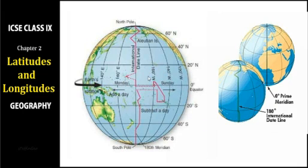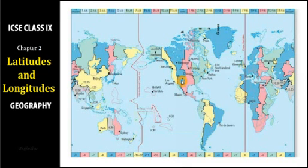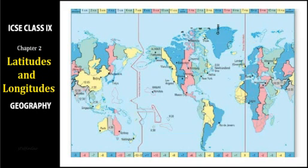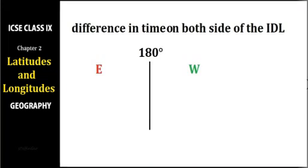On a map, the Prime Meridian passes through London, then parts of France, Africa, and into the Atlantic. Directly opposite to this, the 180-degree meridian — the International Date Line — passes through the Pacific Ocean. There is a difference of 24 hours on both sides of this line, which we will see in detail.